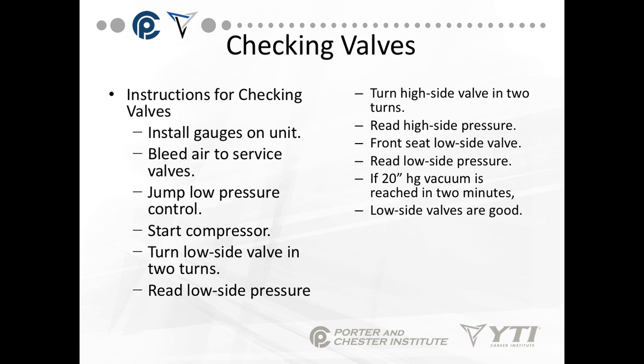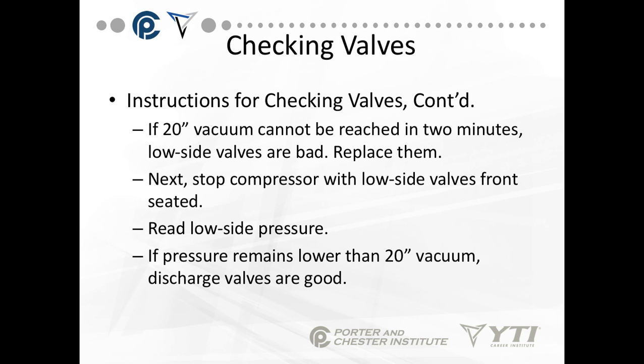To check valves: install the gauges on the unit, bleed the air to the service valves, jump the low-pressure control so the unit doesn't shut off on low pressure, and start the compressor. Turn the low-side valve in by two turns and read the low-side pressure, then turn the high-side valve in by two turns and read the high-side pressure — you've now opened your service valves to mid-seat. Next, front-seat the low-side service valve (all the way in) and read the low-side pressure. You want to reach 20 inches of mercury in less than two minutes — if you achieve this, the low-side valves are good. We want to pull the system into a vacuum, but don't let it run in a vacuum for very long. If a 20-inch vacuum cannot be reached in two minutes, low-side valves are bad and you'll end up replacing the valves (if semi-hermetic) or replacing the compressor.